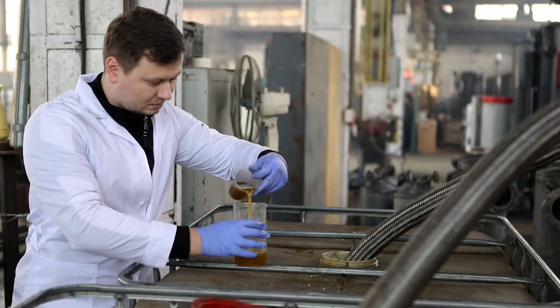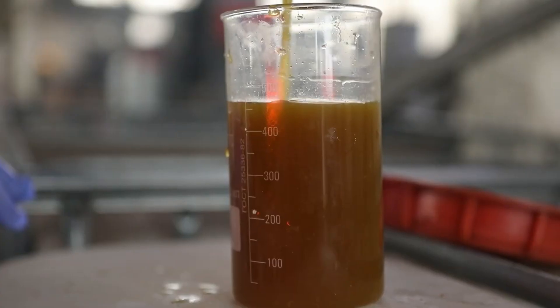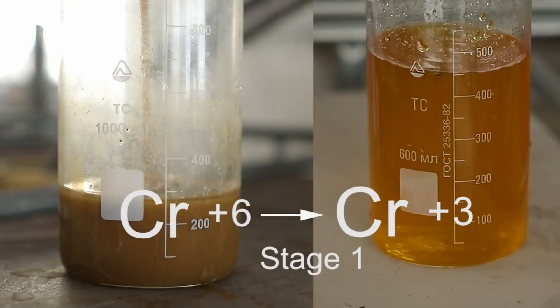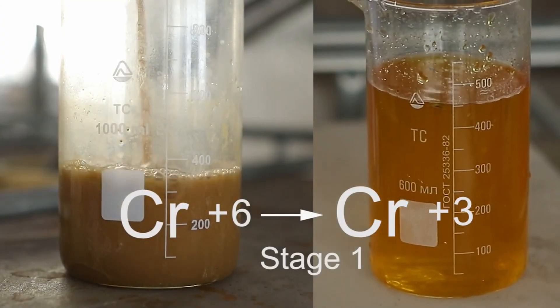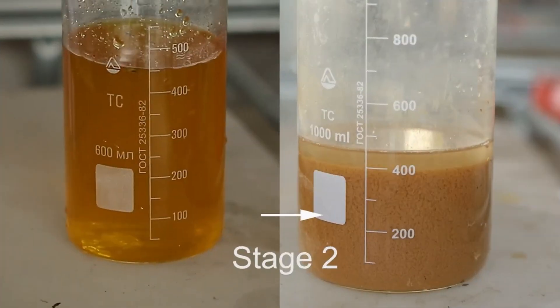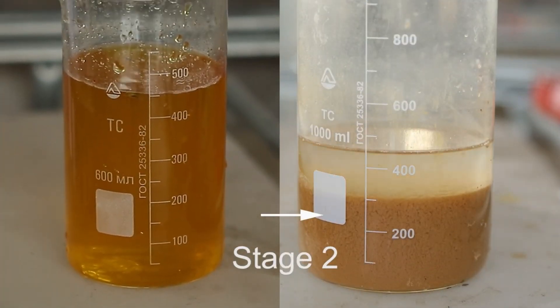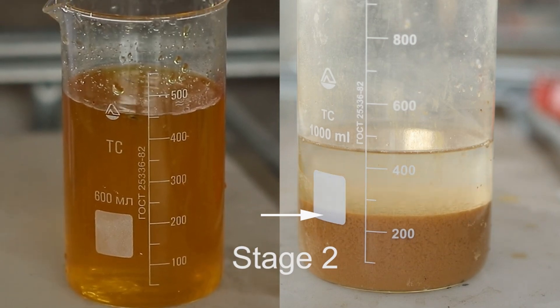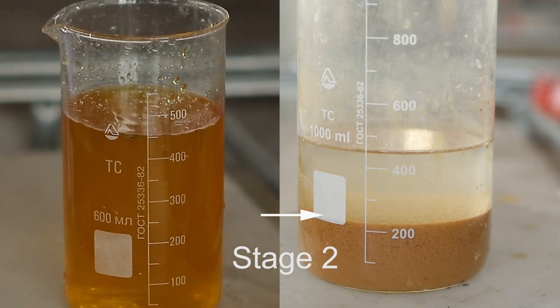If hexavalent chromium concentrations are high, a two-stage treatment is recommended. At the first stage, more toxic hexavalent chromium is converted into less toxic trivalent chromium, and at the second stage, trivalent chromium is converted into poorly soluble compounds after interacting with a chemical agent and removed as a precipitate.